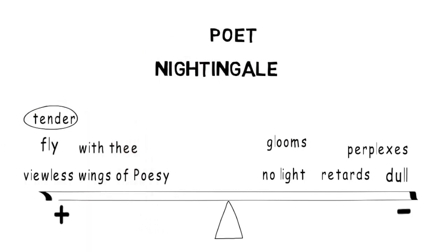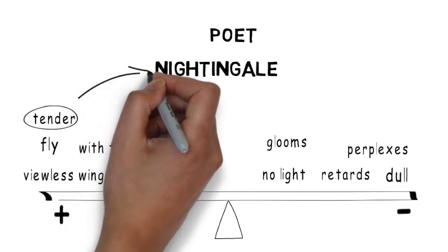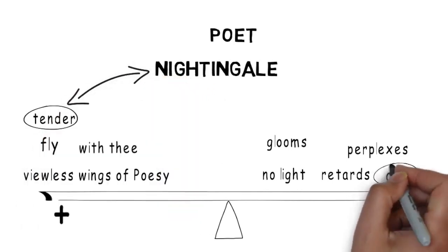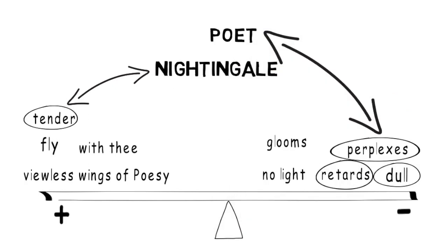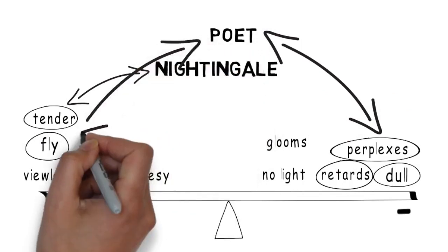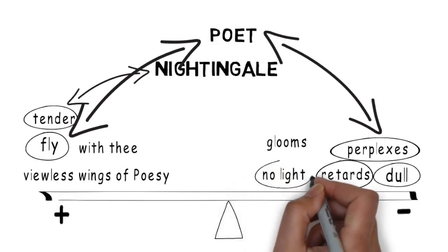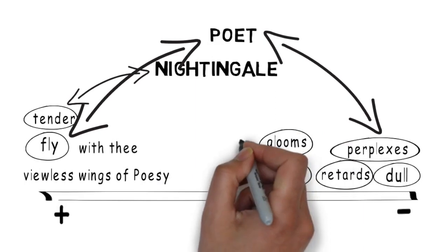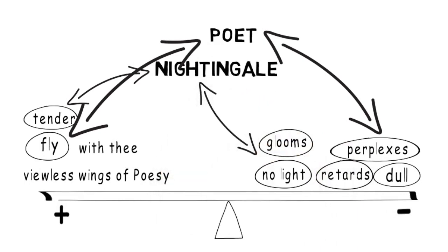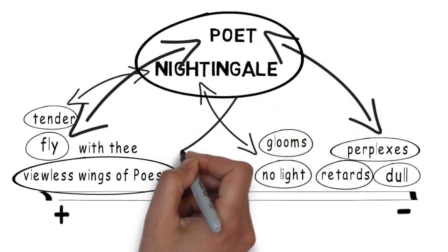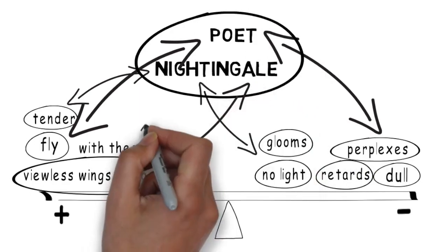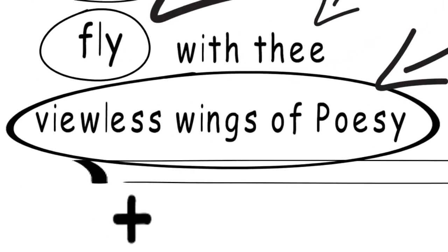We get some of what we expect. We have, for example, tender connecting clearly with the Nightingale, and the dull brain that perplexes and retards connecting with the poet. But it isn't all quite like that. The poet will fly to the Nightingale, so a positive quality gets connected to the poet. And the world of the Nightingale is a world of no light, a world of glooms. From that point of view, the central image of this stanza is perhaps the image of the viewless wings of poesy. This image unites the poet and the Nightingale. Through poetry, the poet can enter the world of the Nightingale and be together with the Nightingale.